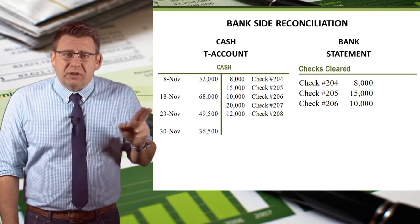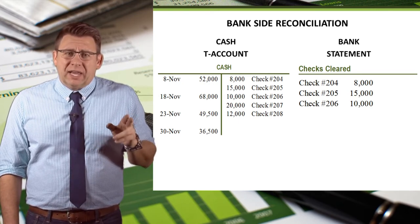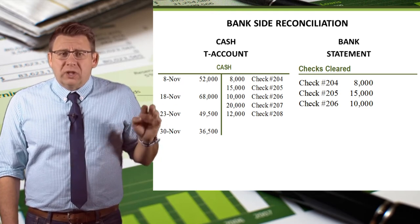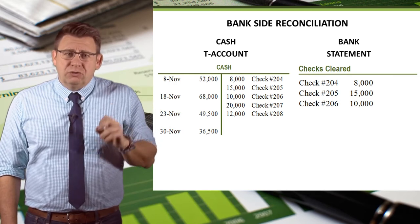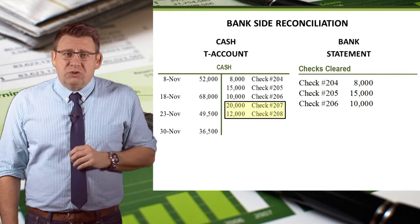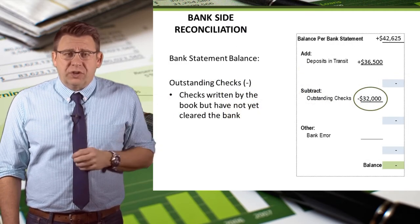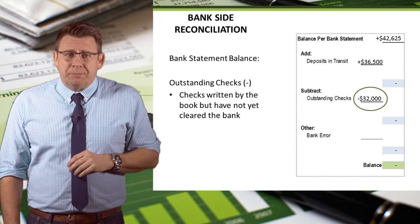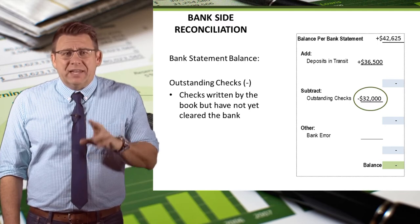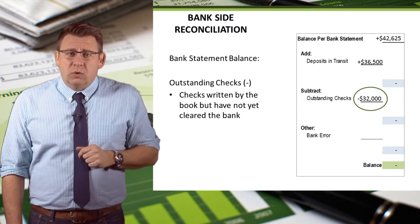Another example of something the book knows about that the bank does not are checks written but not yet cleared the bank. The total cash payments recorded by the company include two checks — number 207 and 208 — that haven't cleared the bank. The total of these two, which is $32,000, becomes a reconciling item for the bank balance called outstanding checks, and it deducts from the bank statement balance because it will decrease the balance once they clear.